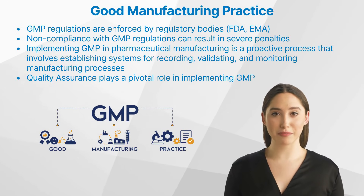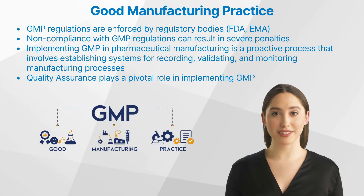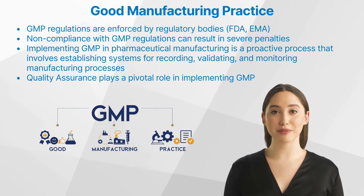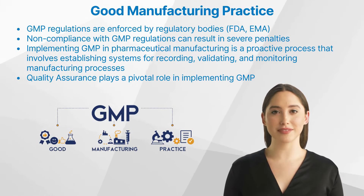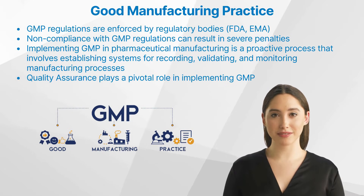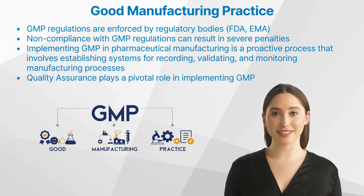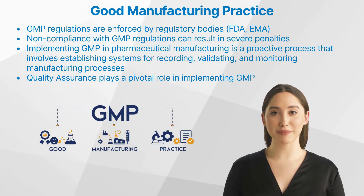But how is GMP implemented in pharmaceutical manufacturing? Implementing GMP is a proactive process that involves establishing systems for recording, validating, and monitoring manufacturing processes. The main goal is to prevent errors that can compromise product quality. Quality assurance plays a pivotal role in implementing GMP. It involves various functions such as system validation, documentation, personnel training, and complaint handling, all aimed at ensuring consistent product quality.